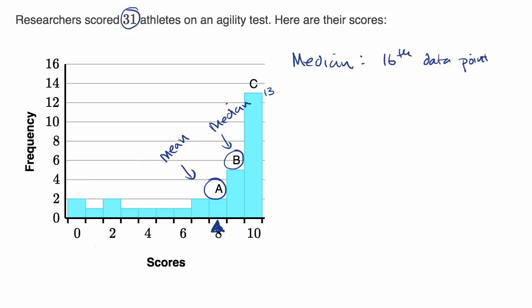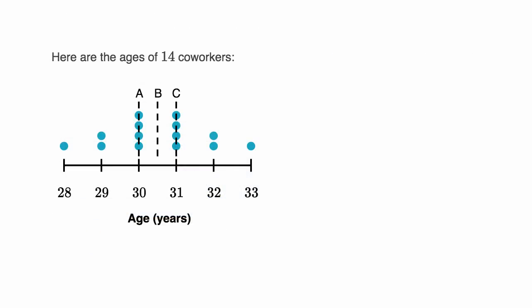So let's do another example. Here we have the ages of 14 coworkers, and what I want you to do is say, roughly where is the mean, and roughly where is the median? Is it roughly at A, is it roughly at B, or is it roughly at C? Pause this video and try to figure it out.